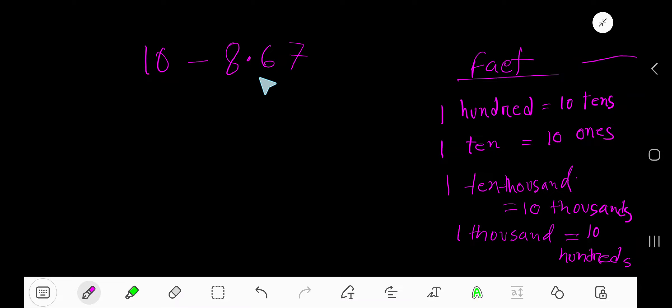How to subtract a decimal number from a whole number: 10 is a whole number and 8.67 is a decimal number. First, convert this whole number into a decimal number. Just take a decimal and then write the number of zeros according to this number. This number has two digits, so we have taken two zeros.